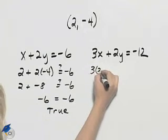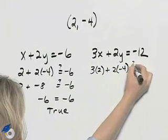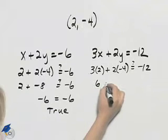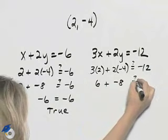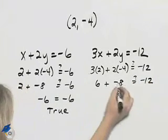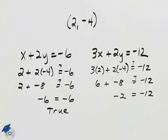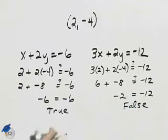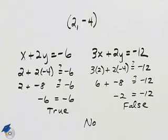In the second equation, we have three times two plus two times negative four. We want to see if that equals negative twelve. Three times two is six, and two times negative four is negative eight. Six plus negative eight is negative two, and negative two does not equal negative twelve, so that is a false statement. Because we did not obtain two true statements, this point does not satisfy the system.